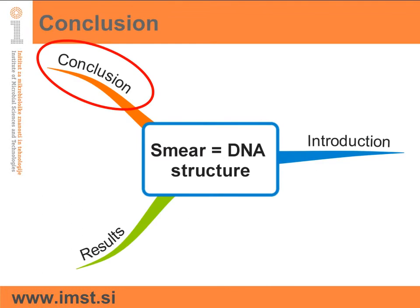To conclude, we caution that the smear can hold important information for our analysis, and prior to its elimination, we suggest that PCR amplicons should be tested in denaturing alkaline gels to determine the true source of the smear and whether it should be eliminated.